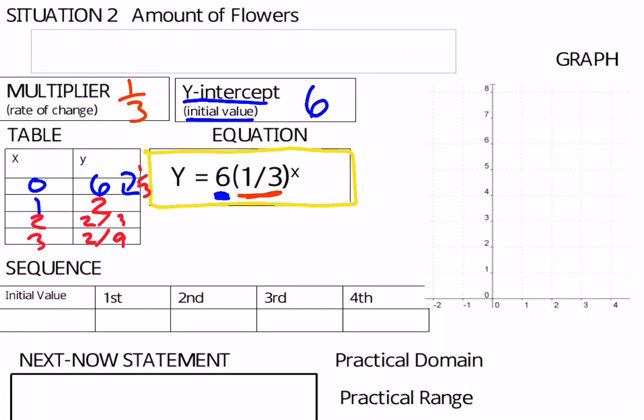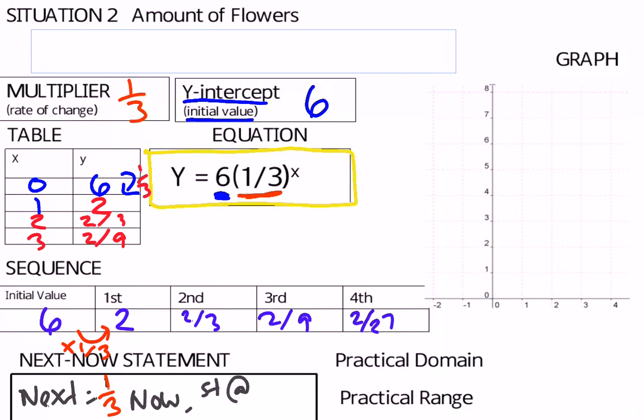We can talk about a sequence as well. My initial value is still 6. After my first term I have 2, then I have 2/3, then 2/9ths, and then I would have 2/27. We're getting really close to 0 there. So once again, we're either multiplying by 1/3 or dividing by 3. We can write a next-now statement: Next equals 1/3 of what I have now, and I'm starting at 6.